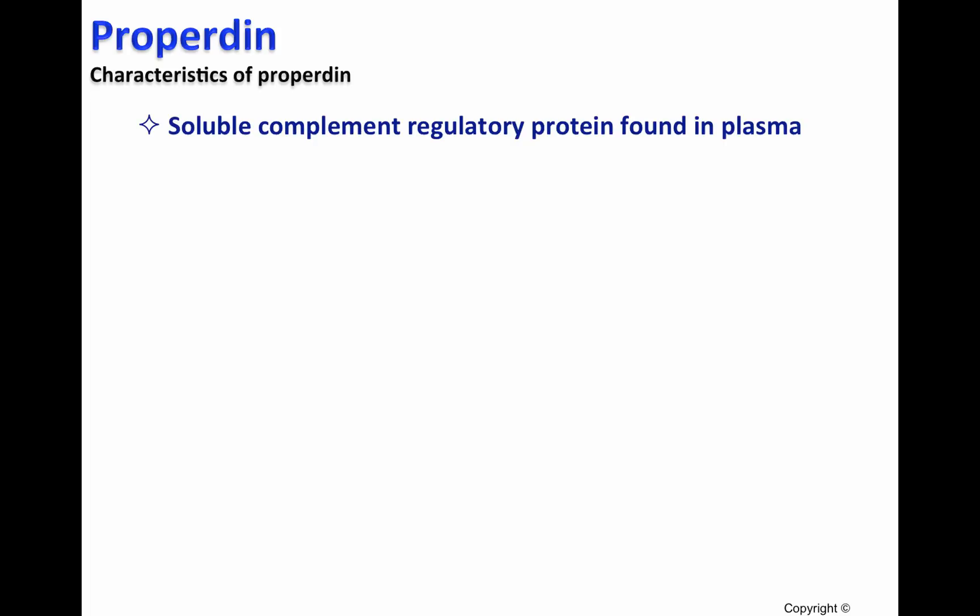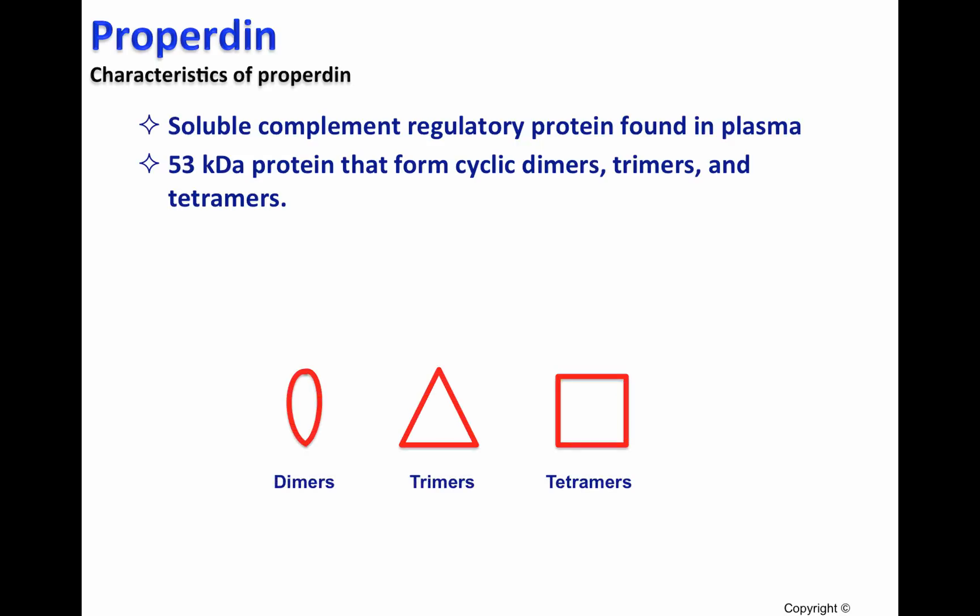Properdin is a soluble complement regulatory protein found in plasma. It's a 53 kilodalton protein that can form dimers, trimers, and tetramers on the cell surface of pathogens.